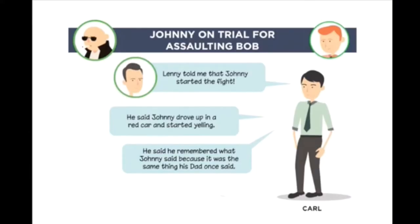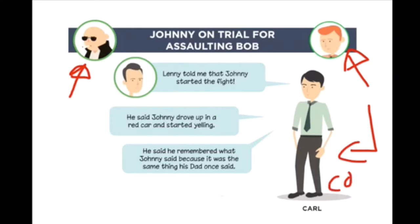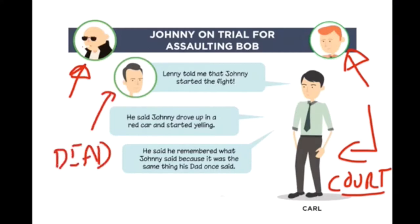I'll be using this example through my discussion of how this particular case impacted on the hearsay rule. This is the accused, Johnny; this is the complainant, Bob; this is our witness who's testifying in court — that's an important distinction in any hearsay case. So Carl is the witness on the stand, and Lenny — let's just say — is dead, which means the witness is unavailable.